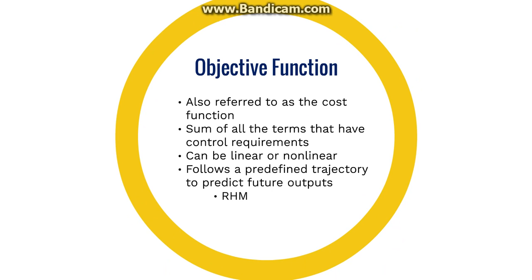The objective function is also known as the cost function. The goal of MPC is to minimize this function. This is the sum of all the terms that have control requirements, and these terms are weighted according to their significance in the process. The objective function can be linear or nonlinear, and the linearity is determined according to the constraints. It follows a predefined trajectory computed by the receding horizon method in order to calculate future outputs.